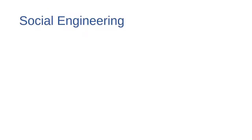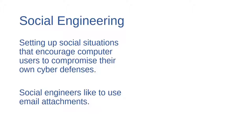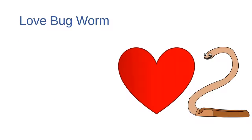Malware source number five is email attachments. One way that cybercriminals spread malware is through social engineering — the practice of setting up social situations that encourage computer users to let down their guard and compromise their own cyber defenses. One common method of social engineering is to attach malware-infected files to emails. The email might claim to come from a known source, and the body will usually say something that piques the reader's interest or makes them feel concerned.